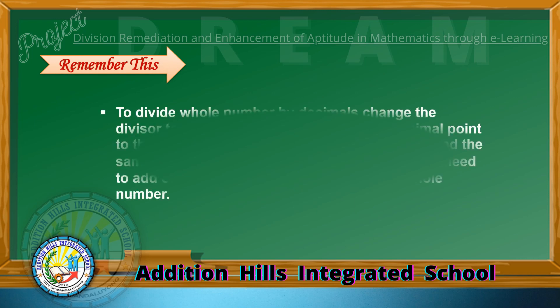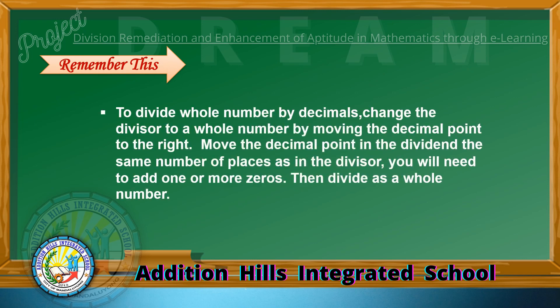Always remember: in dividing a whole number by decimals, change the divisor to a whole number by moving the decimal point to the right. Move the decimal point in the dividend the same number of places as in the divisor. Add one or more zeros if needed, then divide as with whole numbers.